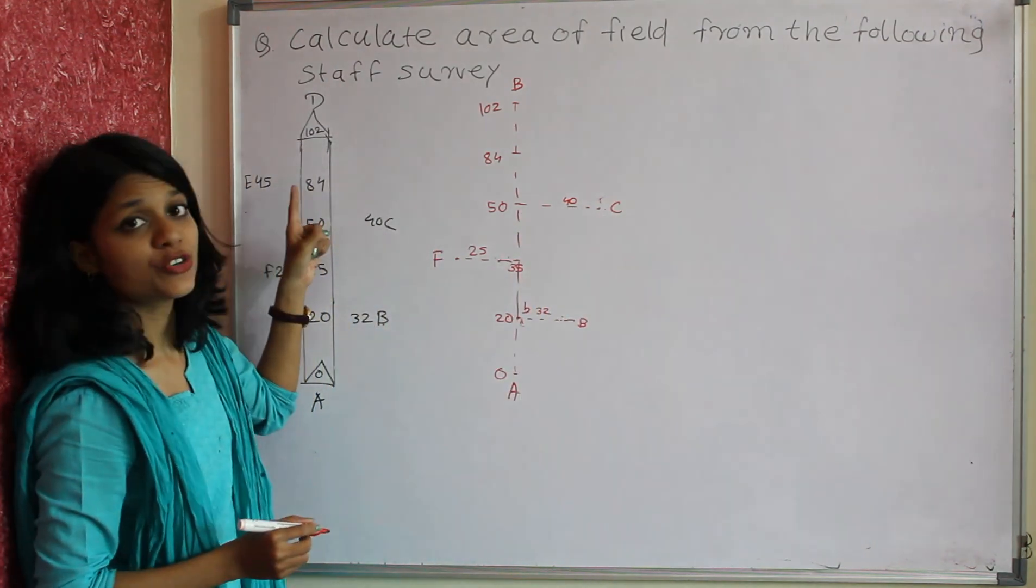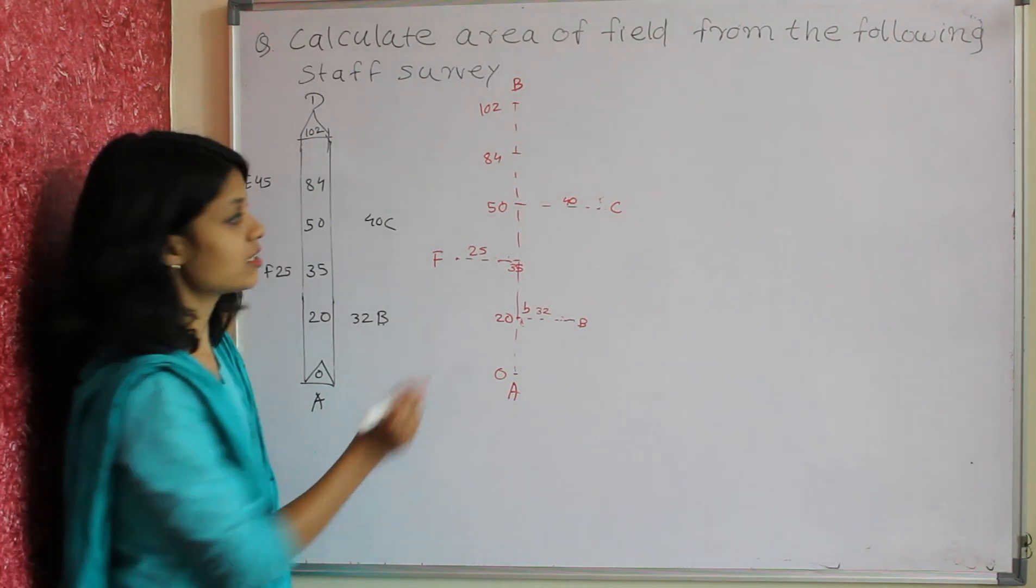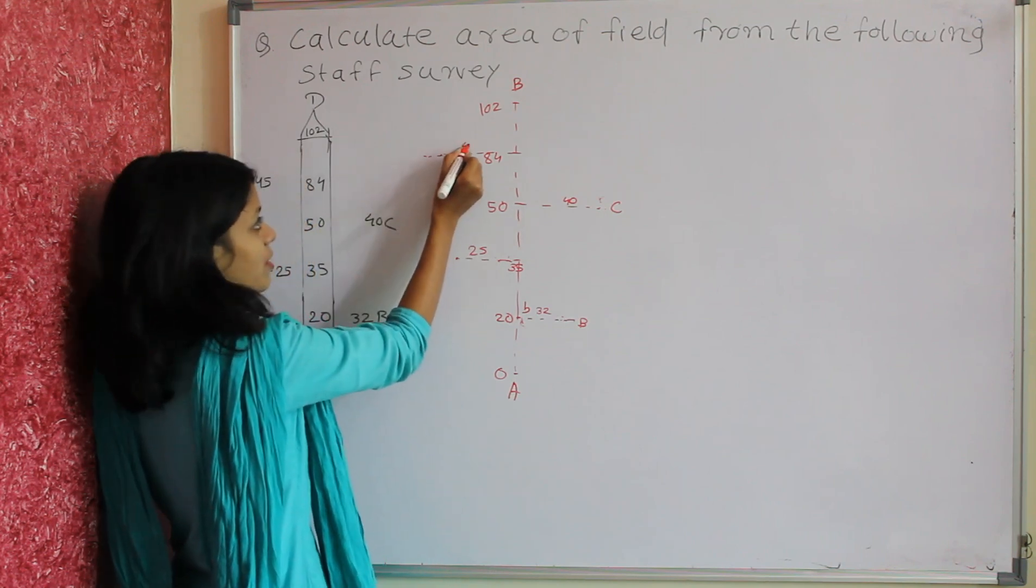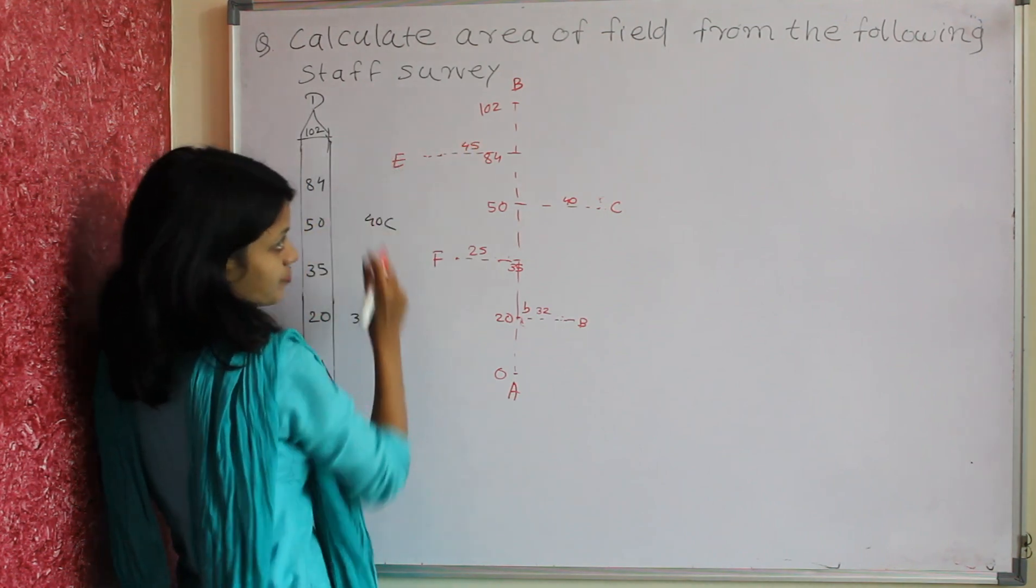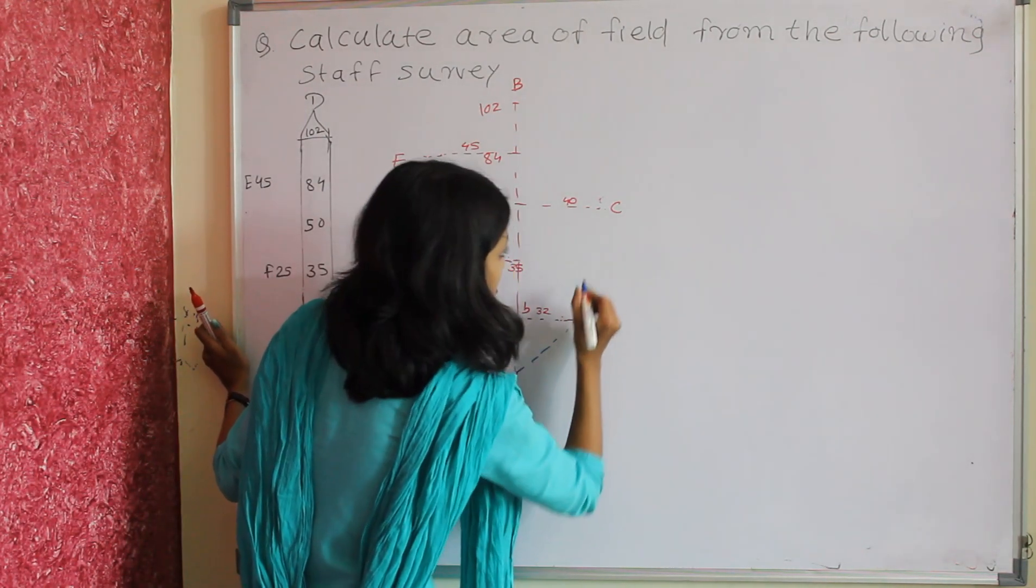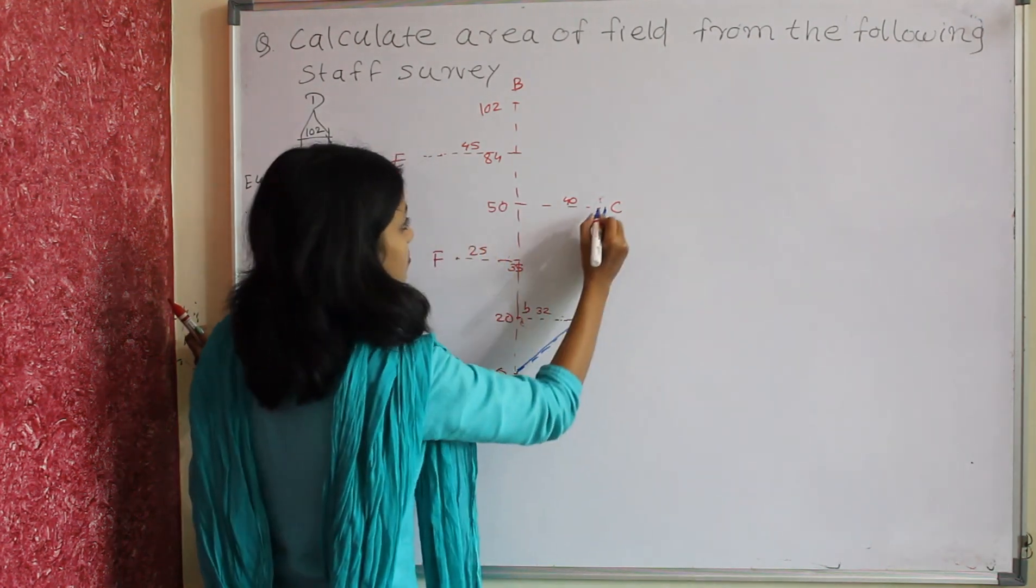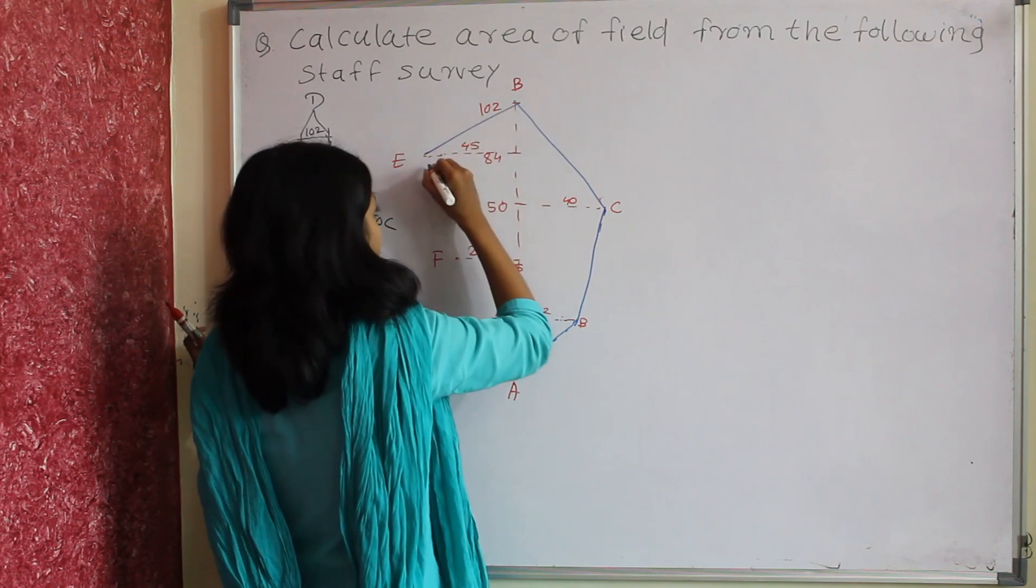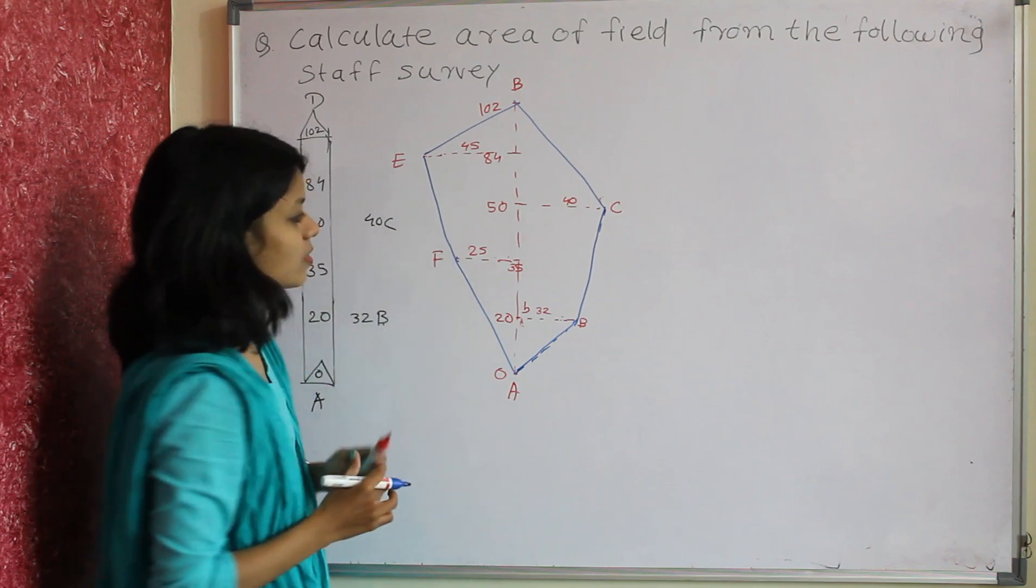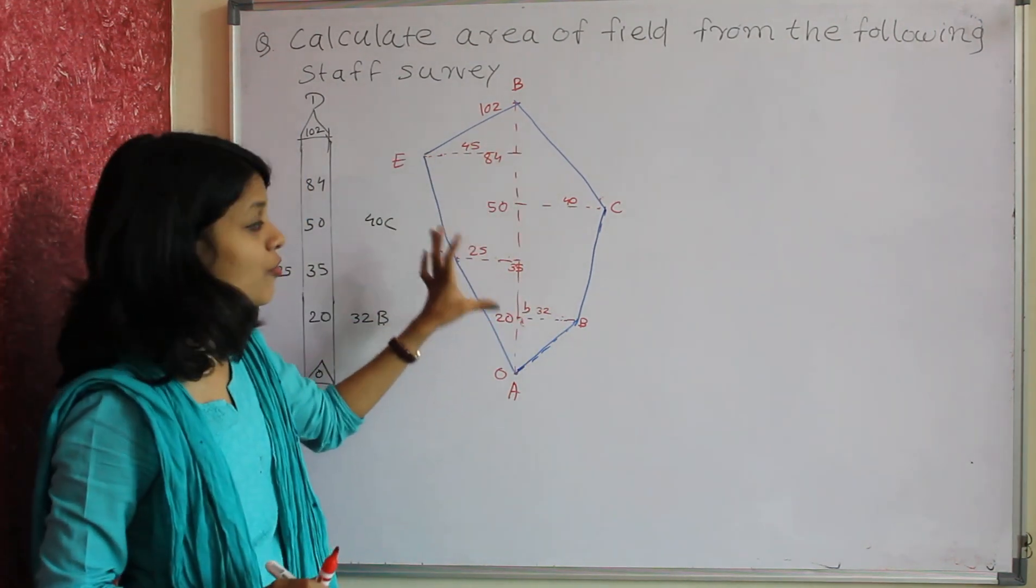Then at a chainage of 84 meters, offset at left hand side is 45 meters at point E. Now connect all these points. We have one area, the area of fill, which we need to find.